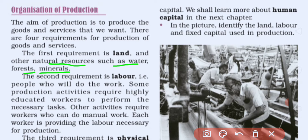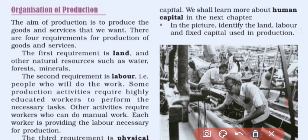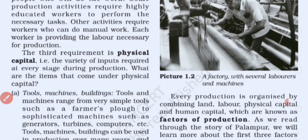The second requirement is labor. For the production process we need educated workers to perform the necessary tasks, and we also need workers who can do manual work. It means for the production process we need both skilled and unskilled people.